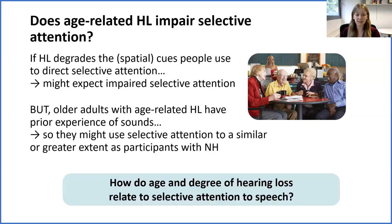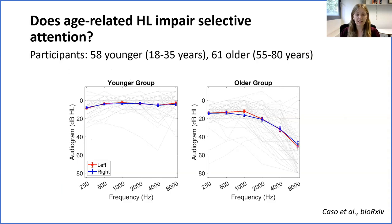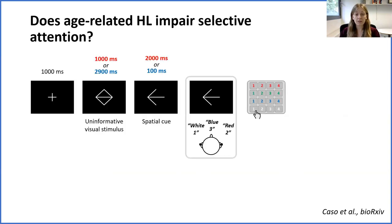In a behavioural study we recently conducted, we investigated how age and the degree of age-related hearing loss relate to preparatory spatial attention. We recruited two groups: one aged 18 to 35 years and another aged 55 to 80 years. We weren't recruiting a clinical sample, so we expected quite a variety of audiometric thresholds in each group, and we took an individual differences approach to examine how spatial attention relates to audiometric thresholds. There was some variability within each group, though more so in the older group, who had worse thresholds overall as expected.